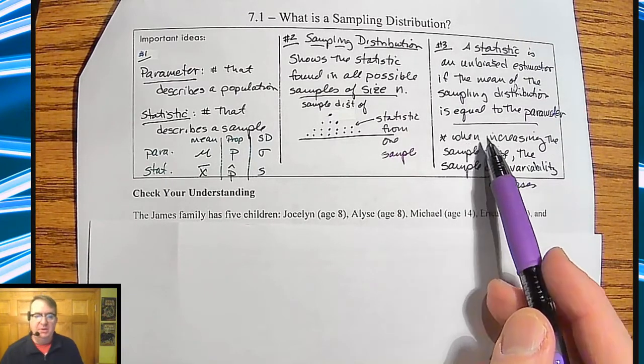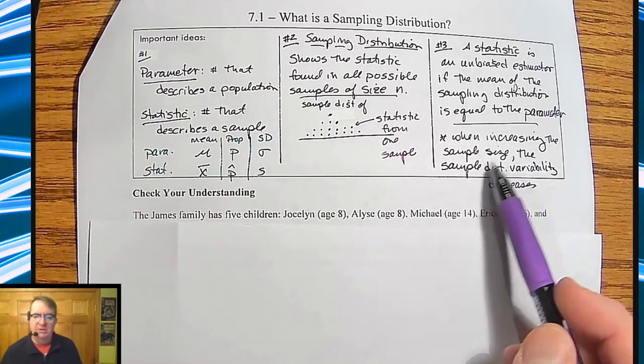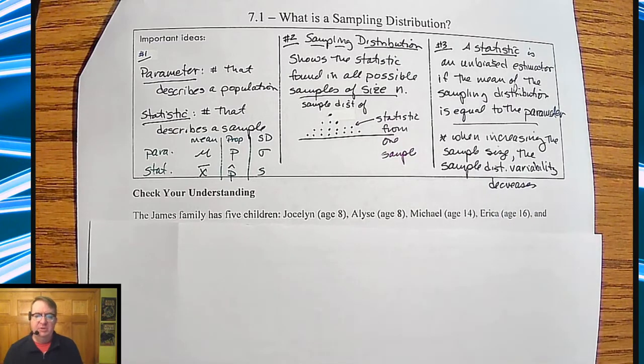Another thing to remember is when increasing the sample size, the sample distribution variability also decreases. As the sample gets bigger, our numbers get closer back in. If you've done consumer ed, that's part of the reason why index funds have said so popular because there's not so many fluctuations because you have so many stocks, it brings the fluctuations in.